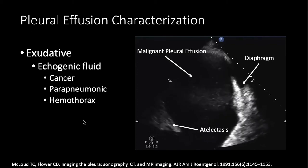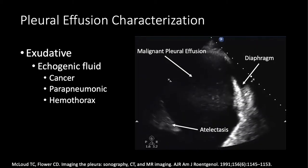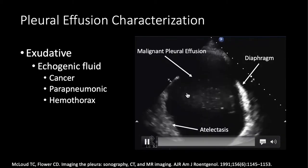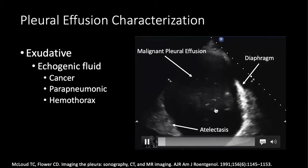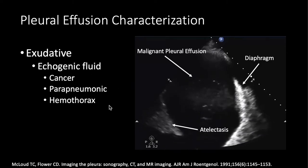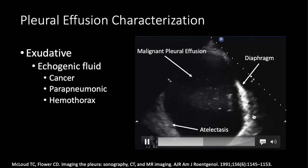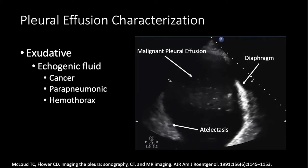Here's an example of echogenic fluid in the pleural space, indicative of an exudative pleural effusion. When you see this floating debris — sometimes called the floating plankton sign — it's due to high protein content. It's either cancer, a parapneumonic effusion, or hemothorax, again requiring a diagnostic thoracentesis. This is not due to classic CHF; it has high protein content and needs further investigation. CT cannot see this echogenic fluid — ultrasound is superior.